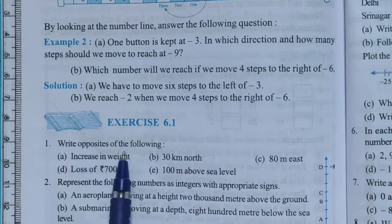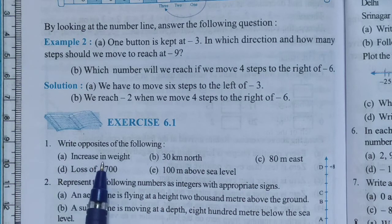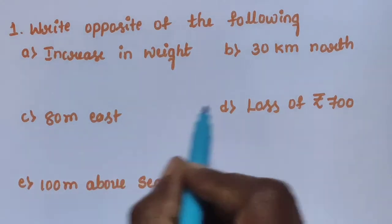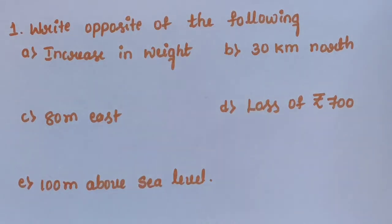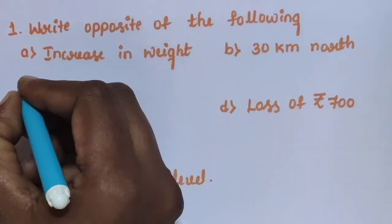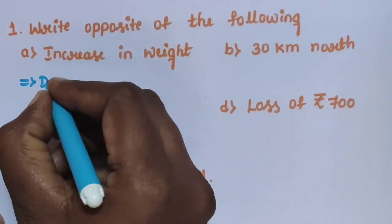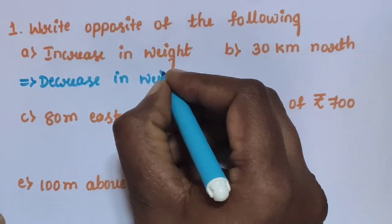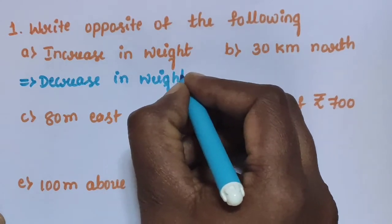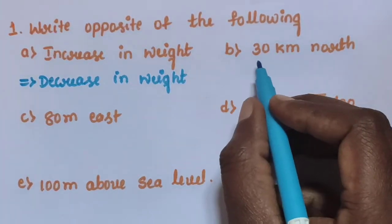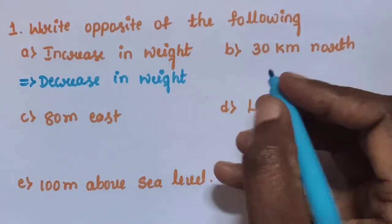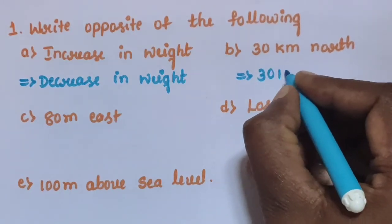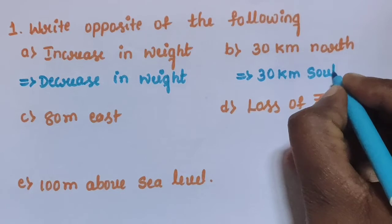Question 1: Write opposites of the following. Sub-question A: Increase in Weight — the answer is Decrease in Weight. Sub-question B: 30 Kilometer North — the opposite answer is 30 Kilometer South.